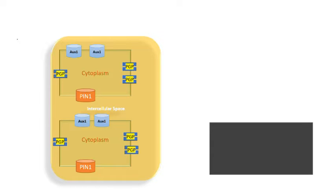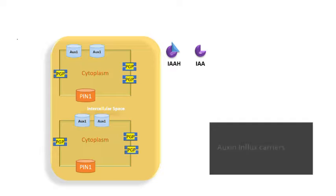Let us see the components of auxin transport. Auxin can be transported in two different manners: one is the polar movement from the top of the plant cell to the bottom, that means from the shoot towards the root. The second type is the lateral movement, from the top of the cells to the neighboring lateral side. The auxin transport includes two different forms of auxin: one is the IAAH form and another is the IAA- form. These forms arise due to the presence of different pH in the environment. The important constituents of auxin transport are the transporters, namely the AUX1 or LAX transporters, which are known as auxin influx carriers and take auxin inside the cytoplasm.